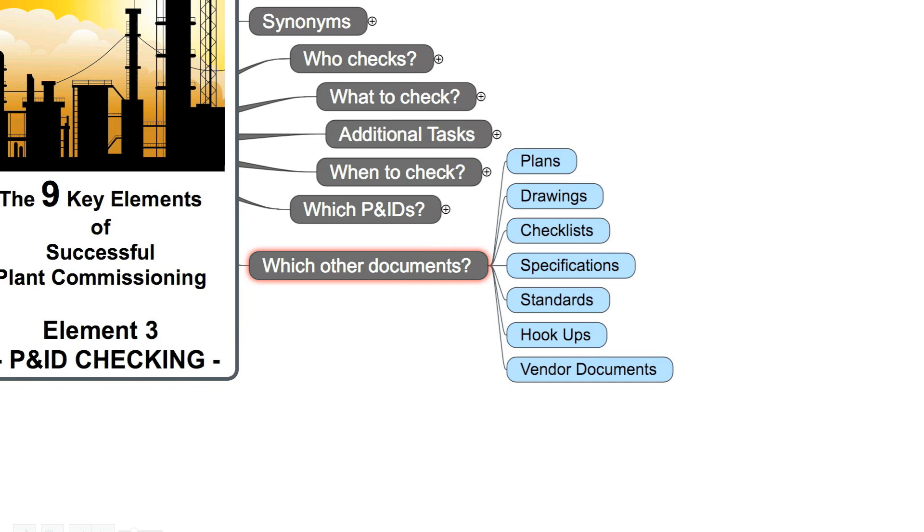There are a few or sometimes even a lot more other documents you need to perform the P&ID check, like all different kinds of plans, equipment drawings, different types of checklists, engineering and vendor specifications, company national and international standards, hookup drawings, and vendor documents for complicated equipment.